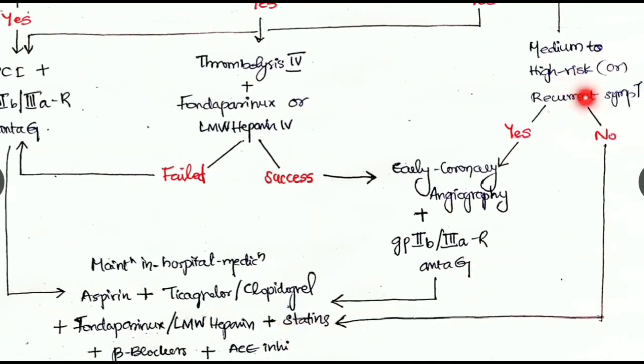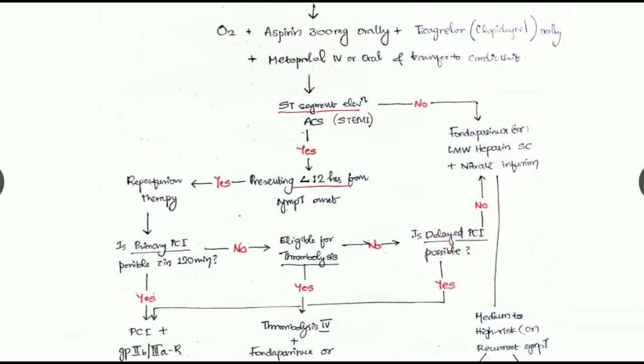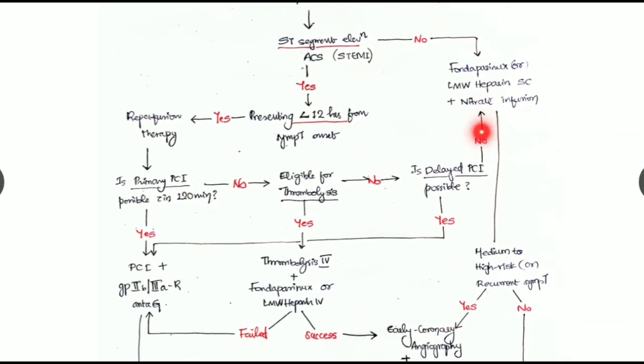If there is no risk or if there is no recurrent symptoms also, we have to give this treatment towards the end. This is the flow chart of management of acute coronary syndrome, and this you have to study by heart.